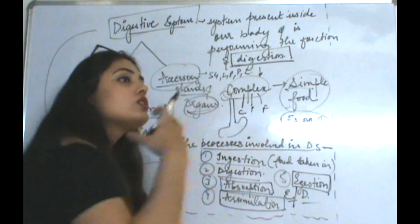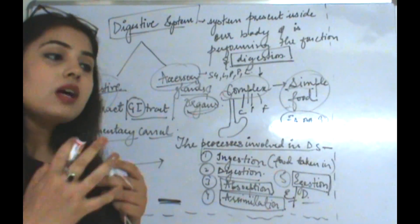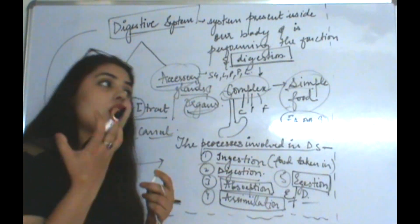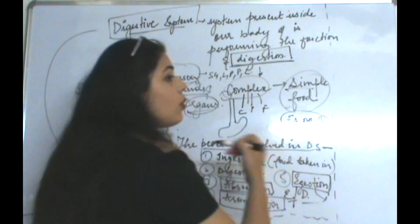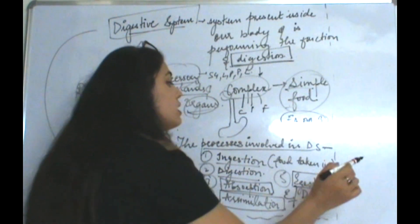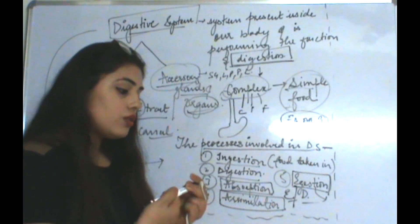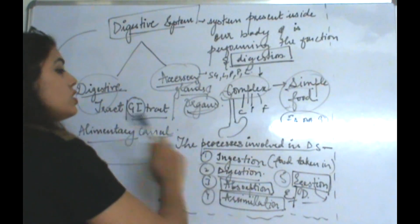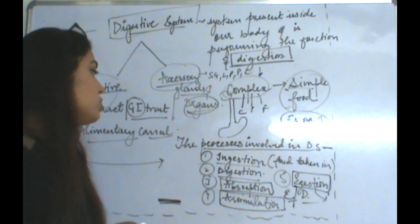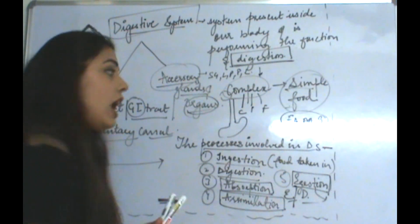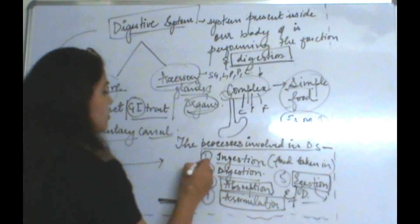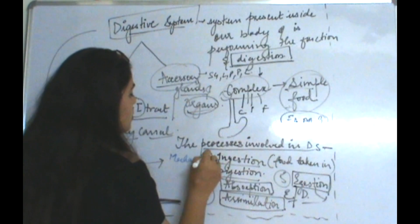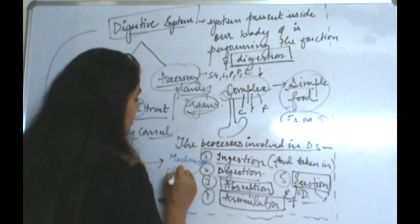Assimilation means the absorbed food goes to the required place in the body. When food is digested inside the body, some part remains undigested. That undigested food is excreted out of the body, and this process is known as egestion or defecation. Now, there are two types of digestion: the first is mechanical digestion and the second is chemical digestion.